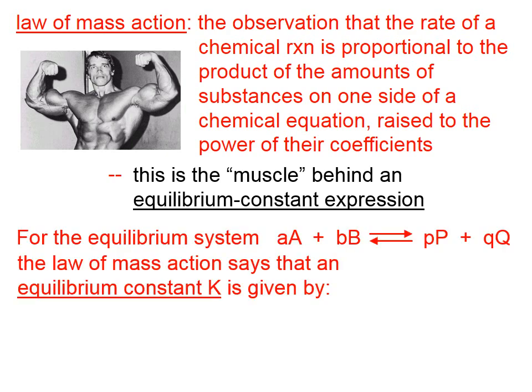For this equilibrium system, you can see we've got two reactants, A and B. They have certain coefficients for the balanced equation. Then we've got two products, P and Q, also with coefficients such that the equation is balanced.